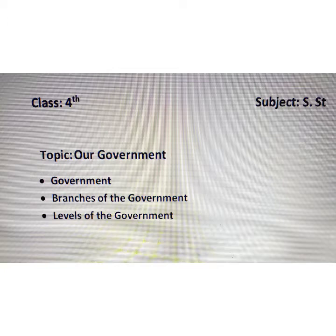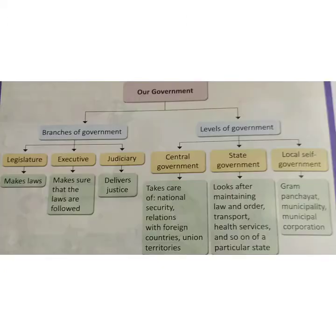A group of people that make rules for a country form the government. It ensures that rules are followed throughout the country. Like in school we have some people who make rules so that the school can function properly. Similarly in a country like India there are people like our prime minister, president, and chief minister that make rules for the country so that our country functions properly. But the question is: why do we need a government?